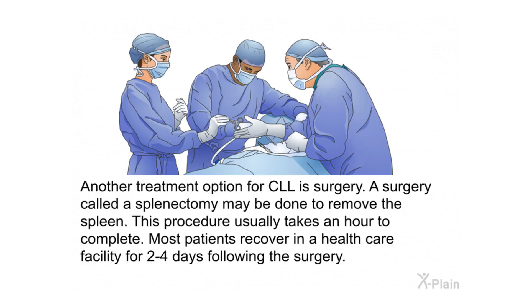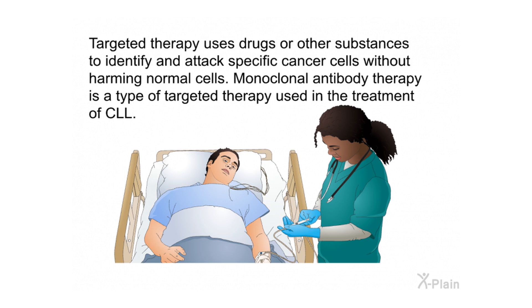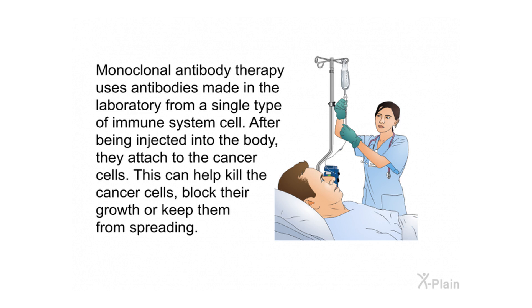A surgery called a splenectomy may be done to remove the spleen; the procedure usually takes an hour, and most patients recover in a health care facility for two to four days. Targeted therapy uses drugs or other substances to identify and attack specific cancer cells without harming normal cells. Monoclonal antibody therapy is a type of targeted therapy used in CLL treatment, using antibodies made in the laboratory from a single type of immune system cell that, once injected, attach to cancer cells to kill them, block their growth, or keep them from spreading.